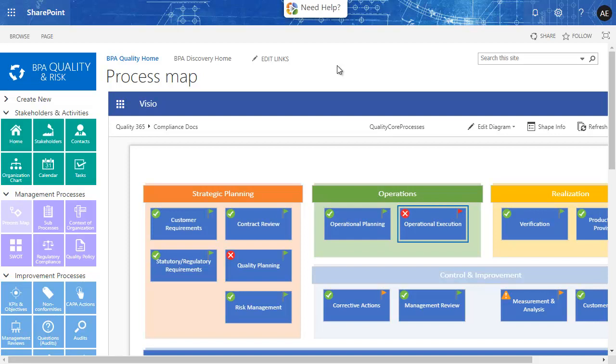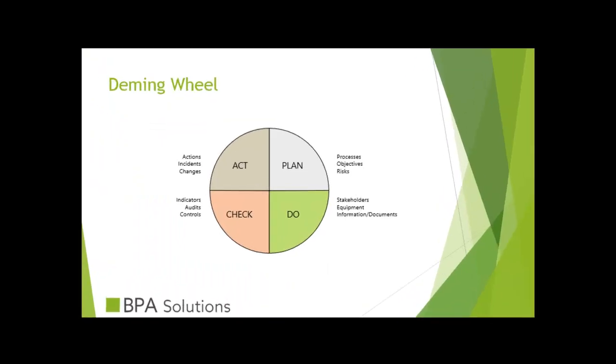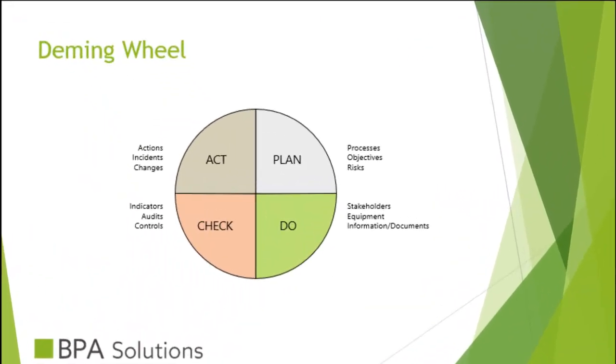This means organizations can use the same tools to set up a global compliance system. The main principle for continual improvement is Deming's Wheel: Plan, Do, Check, and Act.